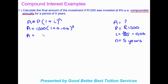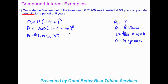The final answer is R1605.87. So after five years at 6% per annum compounded annually, R1200 has grown to R1605 and 87 cents. It's straightforward — we simply substitute the known values into the formula to find the unknown future value.